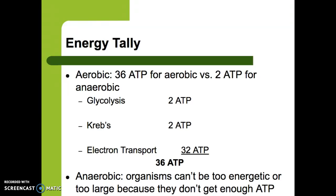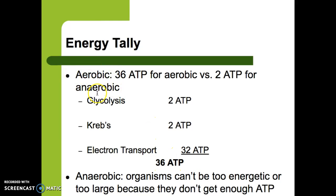Here's the energy tally: we get 36 ATP total from aerobic cellular respiration. Glycolysis makes 2, the Krebs cycle makes 2, and the electron transport chain makes 32. You don't really need to know each breakdown — just know that 36 ATP comes from aerobic cellular respiration, while anaerobic only makes 2, which is why anaerobic organisms can't be too energetic or too large.